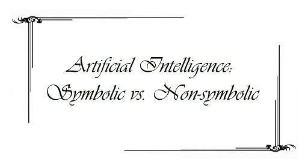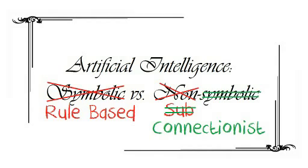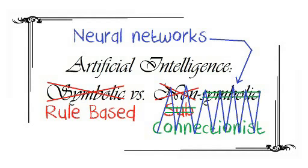Approaches to artificial intelligence generally fall into two categories: symbolic and non-symbolic. Sometimes symbolic AI is referred to as rule-based AI, and non-symbolic AI as sub-symbolic or connectionist AI — you might well know it as neural networks. Together, these represent the two main wings of artificial intelligence, and like the wings of any organisation, they have not always been on friendly terms with each other.